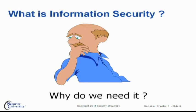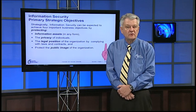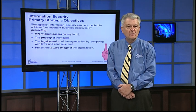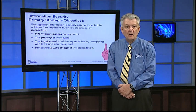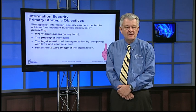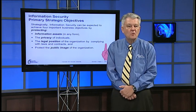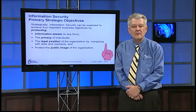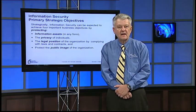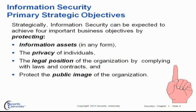First question: what is information security, and why do we need it? Let's look at four very important strategic objectives. First, protecting valuable information assets — they can be in any form: on computers, on paper, or in people's heads. Second, privacy of individuals — you want to make sure that organizations are taking good care of private information about you, such as your health records, and anything that if disclosed to the wrong individuals could get very messy.